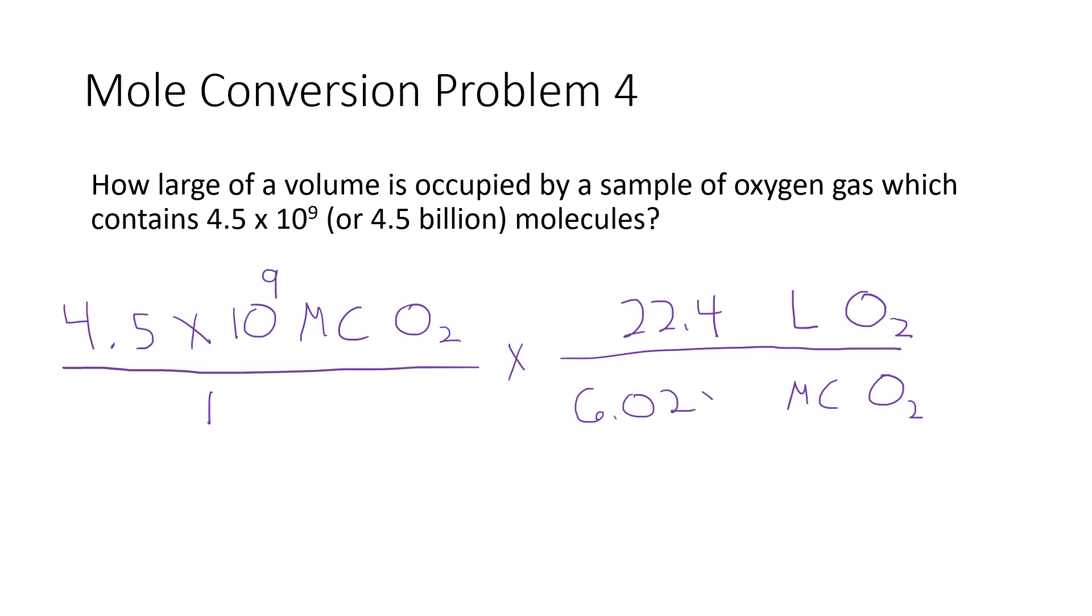The number that goes with molecules is the representative particles number, or Avogadro's number, 6.02 times 10 to the 23rd. Now if I run this through my calculator, I have 4.5 e9 times 22.4 divided by 6.02 e23, and that tells me an answer of 1.67 times 10 to the negative 13th liters of oxygen.